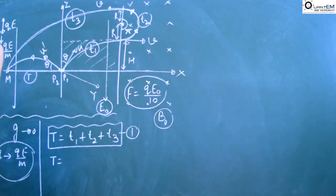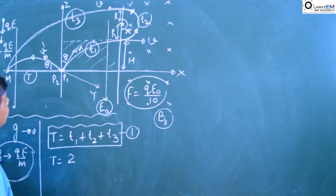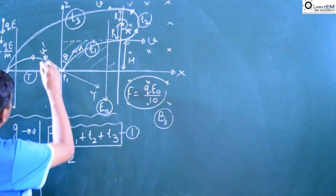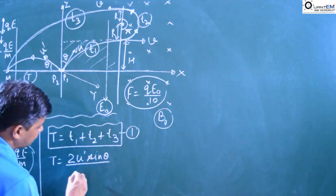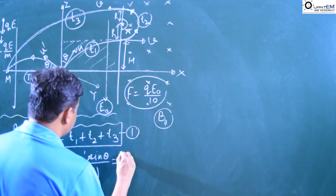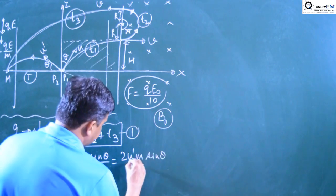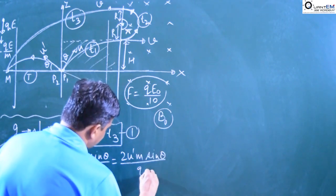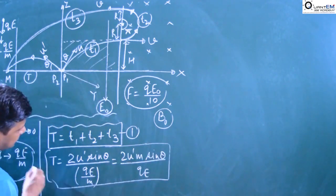In absence of air resistance, we have qE/m in place of g. So T equals u-dash·sinθ divided by (qE/m), giving us T = u-dash·m·sinθ / qE. This is the value of T — equation 2.